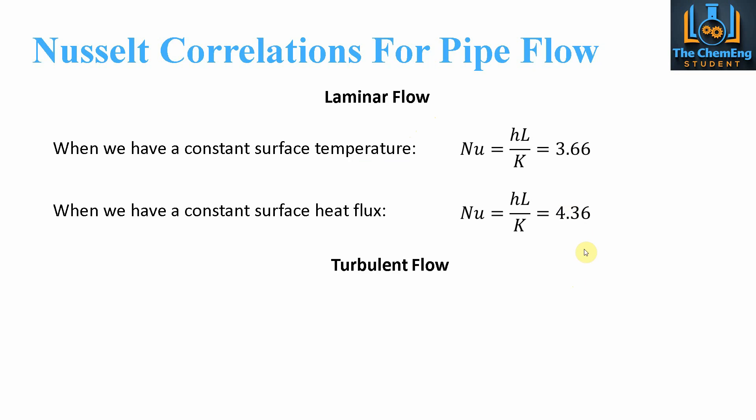Now in terms of turbulent flow, because it is more random, we can't use these fixed exact values. What we can use is the Dittus-Balter equation, and that's given by Nusselt is equal to 0.023, Reynolds to the power 0.8, and Prandtl to the power n. There is a list of values of n for your different configurations based on the Dittus-Balter equation. This is valid for Reynolds greater than 10,000 and Prandtl between 0.6 and 160.